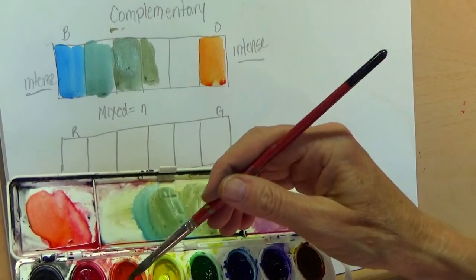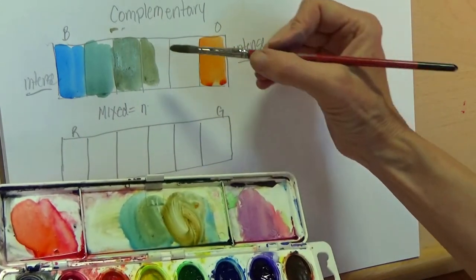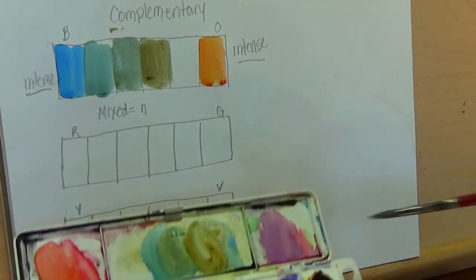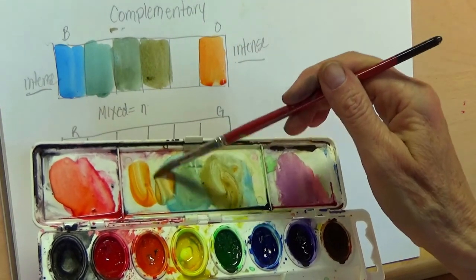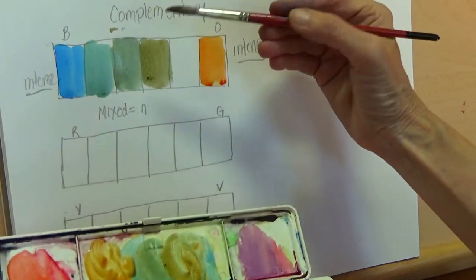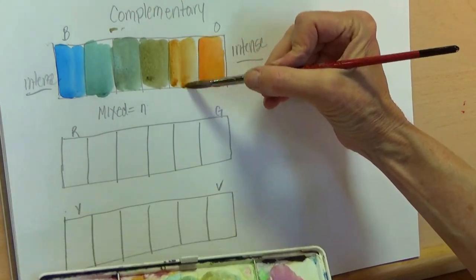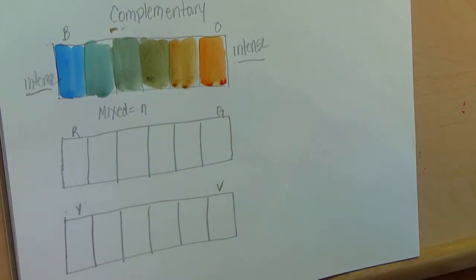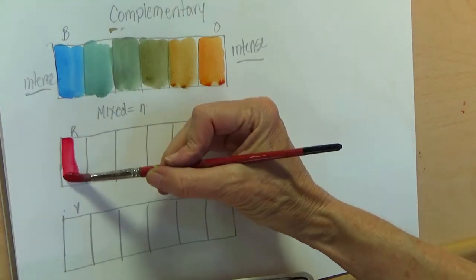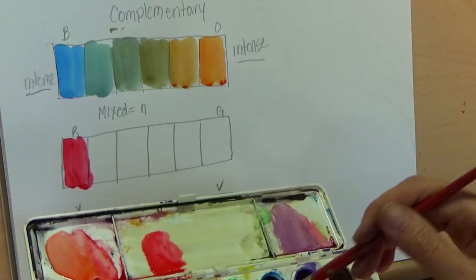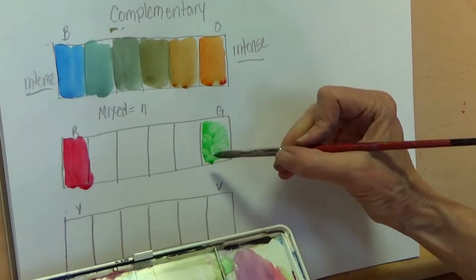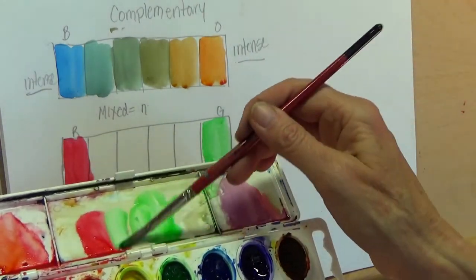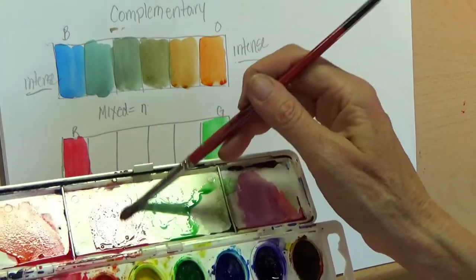As you get to the two center ones they're going to be very neutral. Now when you look at those two middle ones and you can't quite tell if it's blue or orange, that means it's a neutral color. On the outside next to the intense it should still be orange but a little more dull. So now you have your intense on the outside and your dull on the inside. You're going to do the same thing for the red and the green, the most intense on the outside.